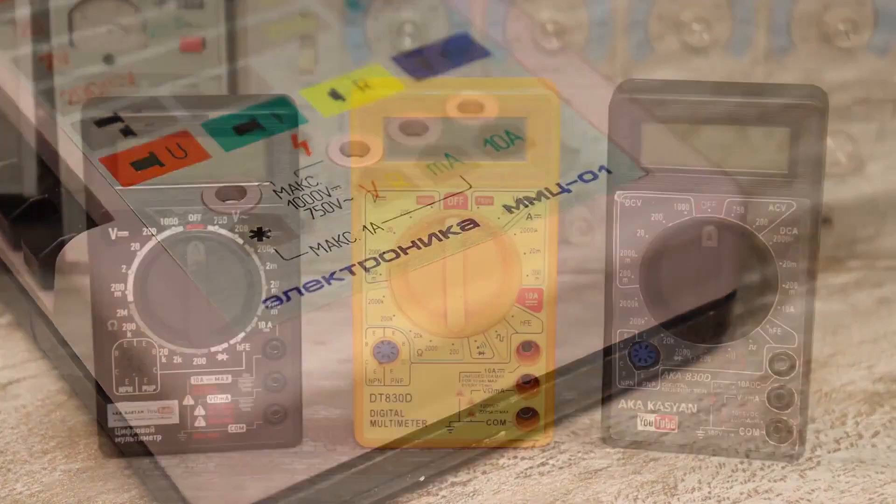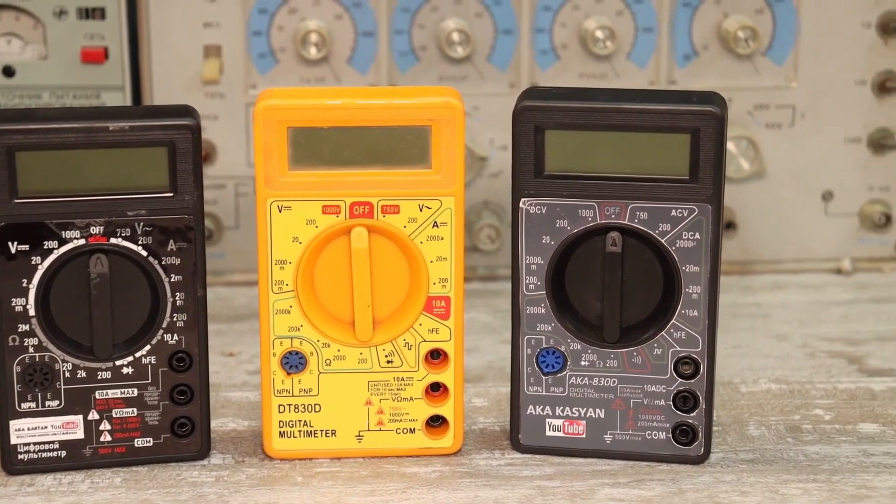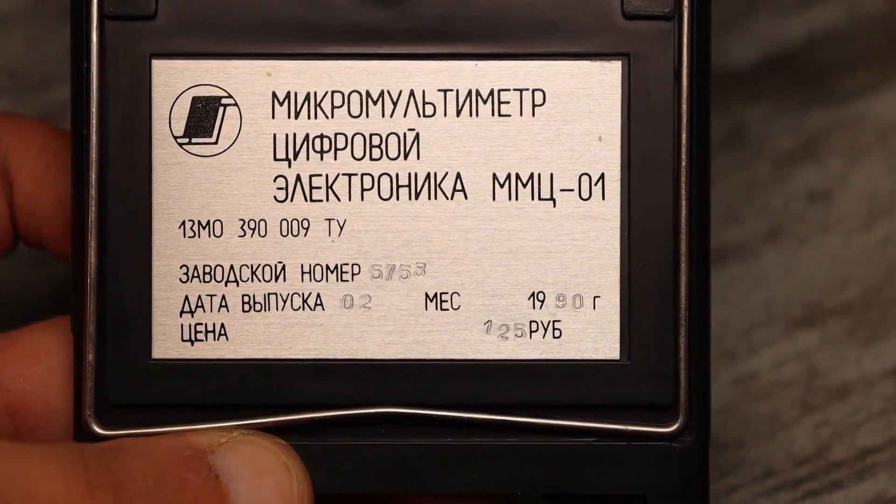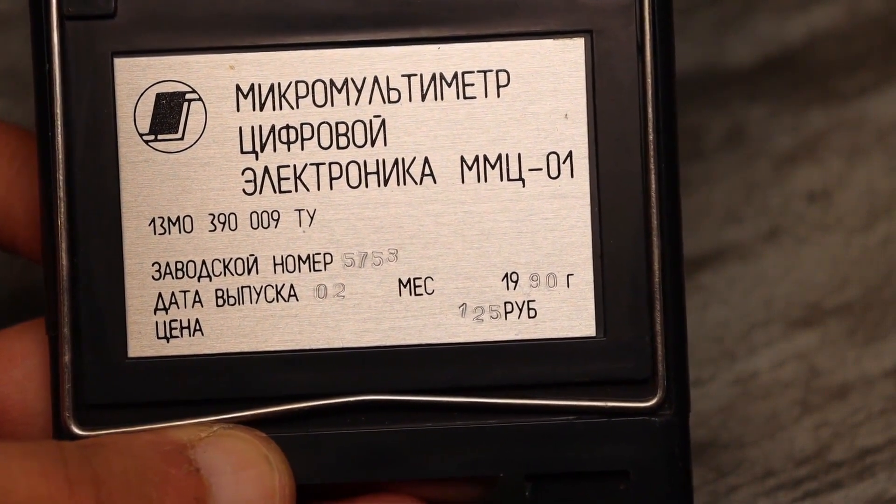For comparison, the digital portable multimeter Electronics MMC01, which functionally is about the same as the DT830, cost nearly 130 rubles in the late 80s, and that was a huge amount. For many it was an entire month's salary.